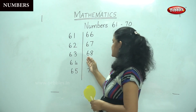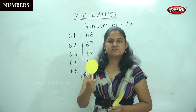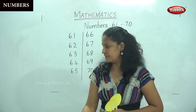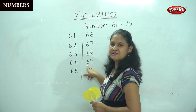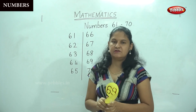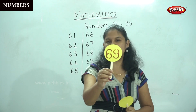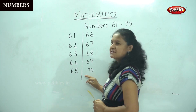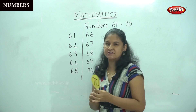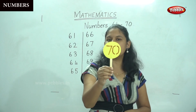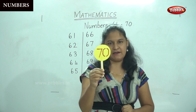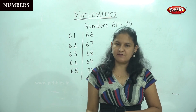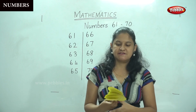The next number is number 68. So this is number 68. Then I have number 69 — 6 and 9, 69. And the last number is 7 and 0, 70. So I have 70 in my hand. Shall we repeat the numbers again from 61 to 70?